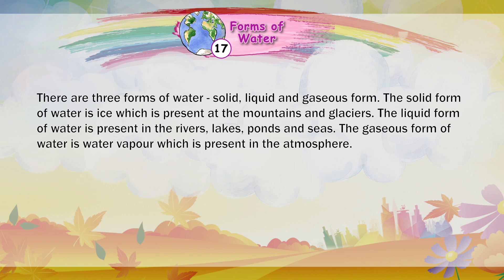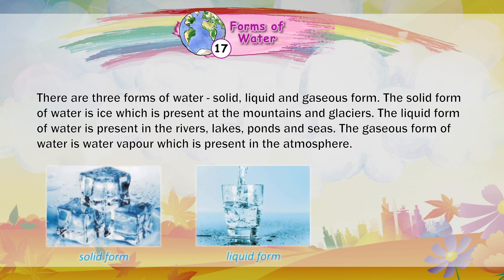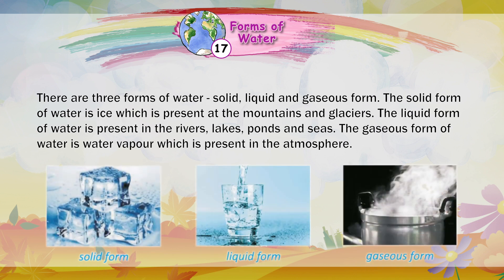There are three forms of water: solid, liquid, and gaseous form. The solid form of water is ice, which is present at the mountains and glaciers. The liquid form of water is present in the rivers, lakes, ponds, and seas. The gaseous form of water is water vapour, which is present in the atmosphere.